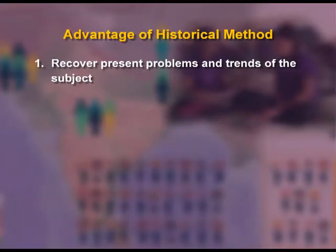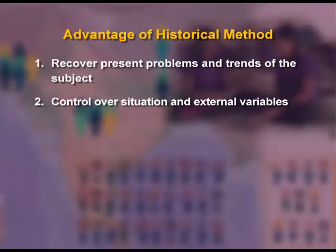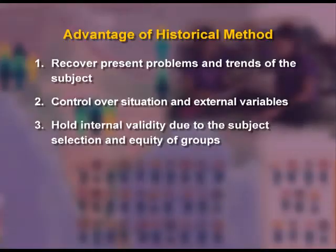Advantages of historical method: First, recovers present problems and trends of the subject — historical method provides evidence of present problems and trends of the subject. Second, controls the situation and external variables. Third, holds internal validity — there is greater confidence that the study has internal validity due to systematic subject selection and equity of groups being compared.